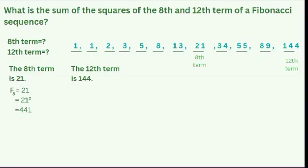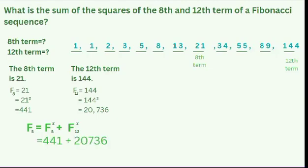Since we are asked to find the sum of the squares, we need to raise each value to the power of 2. F sub 8 is equal to 21, so 21 squared is equal to 441. Next, we find the square for the 12th term: 144 squared is equal to 20,736. Using the formula for the sum of squares of two terms, F sub 8 is equal to 441 and F sub 12 is equal to 20,736. Adding these two terms gives us 21,177.